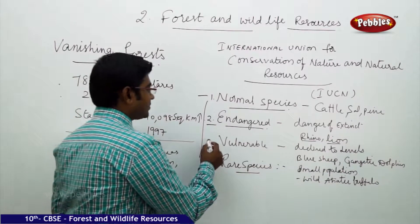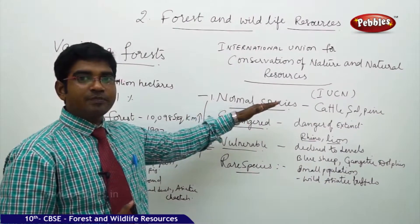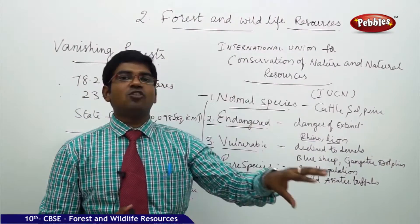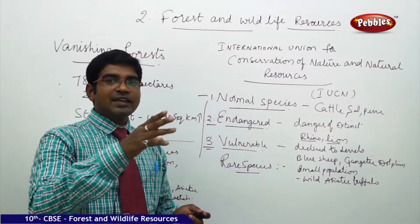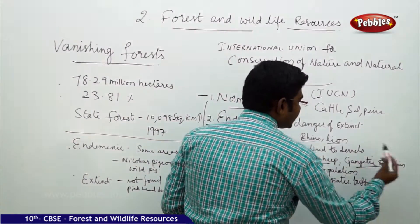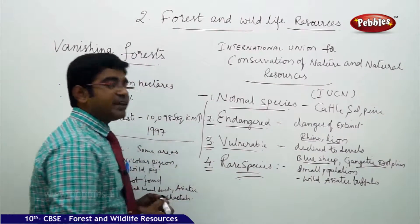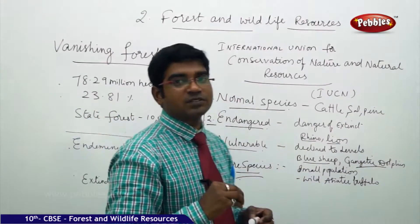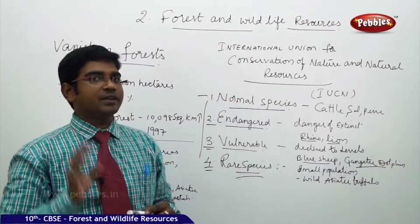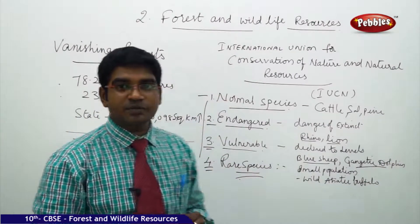The third category is Vulnerable — species that were earlier at normal or endangered levels but whose numbers have rapidly declined and are now close to disappearing. Examples include blue sheep and Gangetic dolphins. The fourth category is Rare species, found only in very small populations — perhaps 5, 10, 50, or 100 individuals — such as the wild Asiatic buffalo.